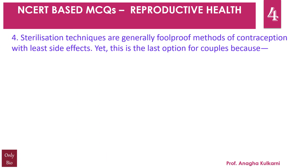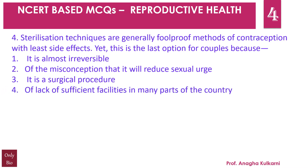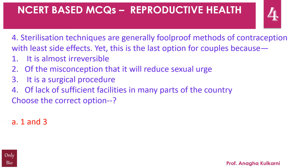Question number 4: Sterilization techniques are generally foolproof methods of contraception with least side effects. Yet this is the last option for couples because: 1. it is almost irreversible; 2. of the misconception that it will reduce sexual urge; 3. it is a surgical procedure; 4. lack of sufficient facilities in many parts of the country. Choose the correct option: A. 1 and 3, B. 2 and 3, C. 2 and 4, D. 1, 2, 3 and 4. The correct answer is D — 1, 2, 3 and 4.